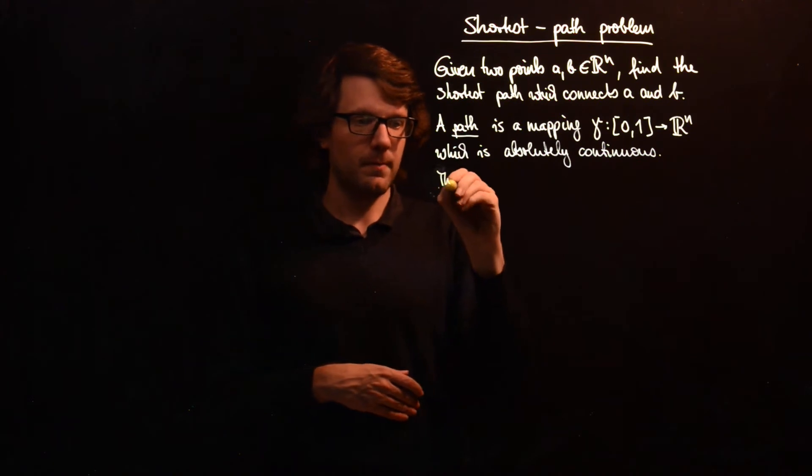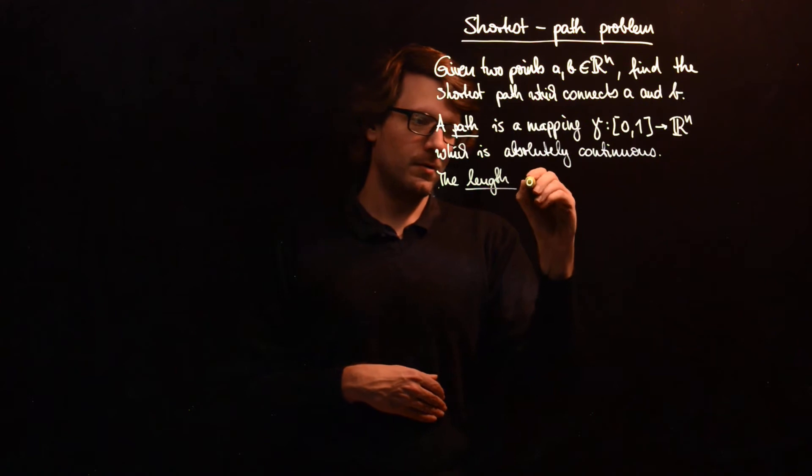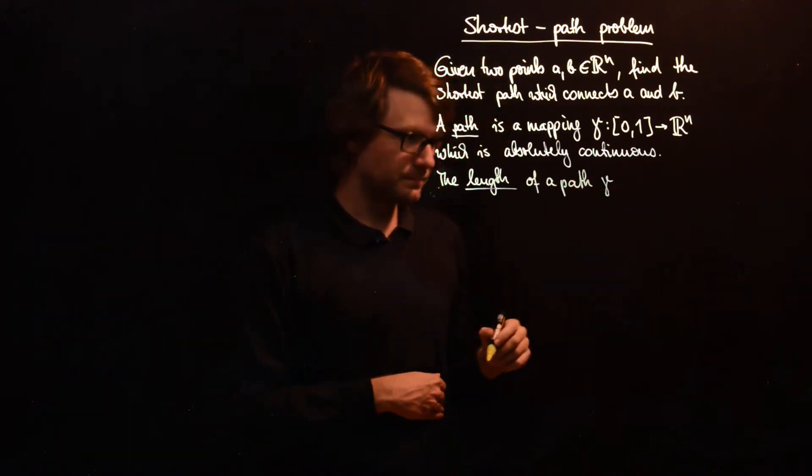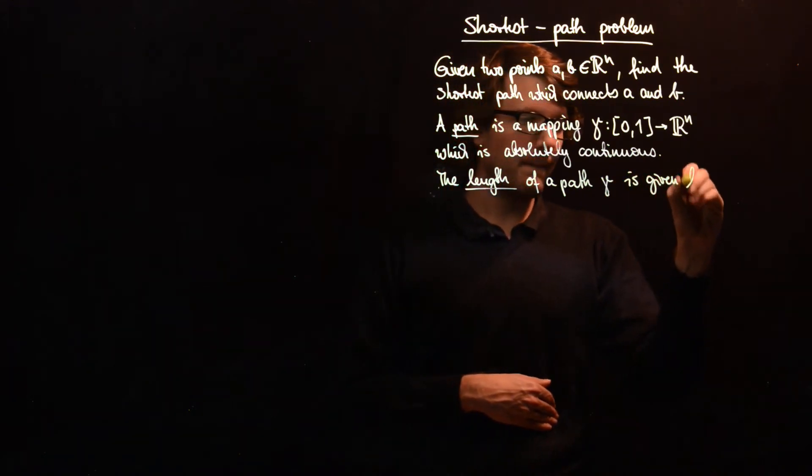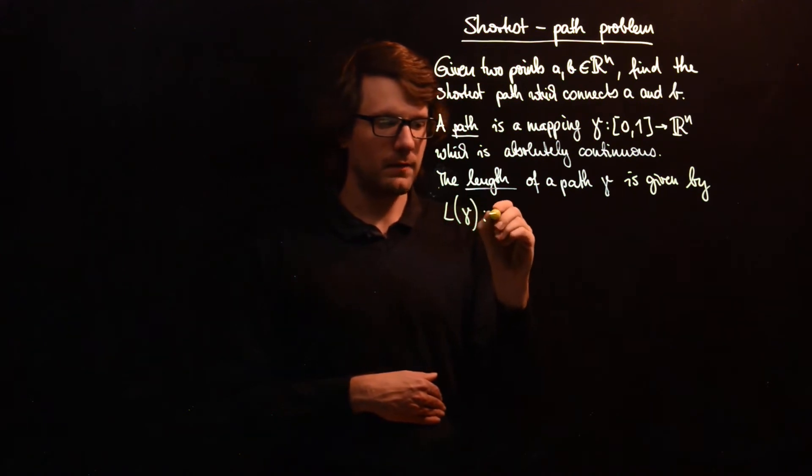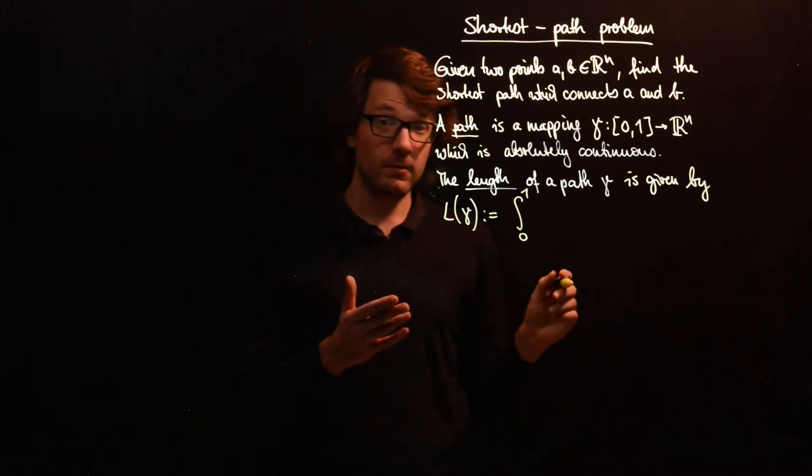And by this we have to do via the length of a path. Okay, the length of a path gamma is given by, and we give it a name L of gamma.